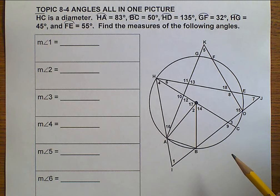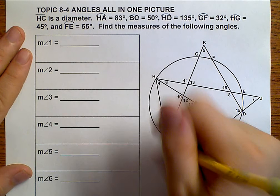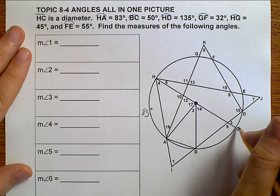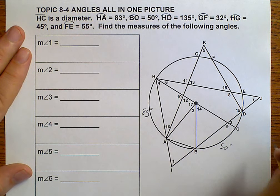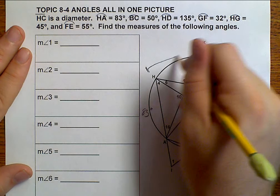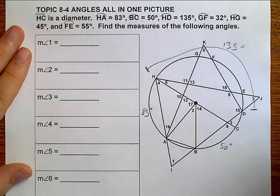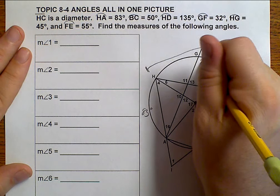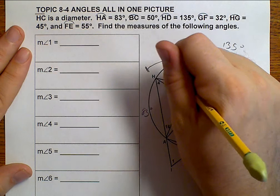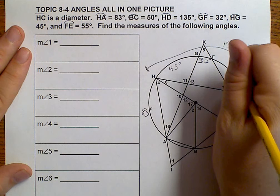Let's first start off with what we are given. We're given that arc HA is 83, arc BC is 50, arc HD is 135, arc GF is 32, arc HG is 45, and arc FE is 55.